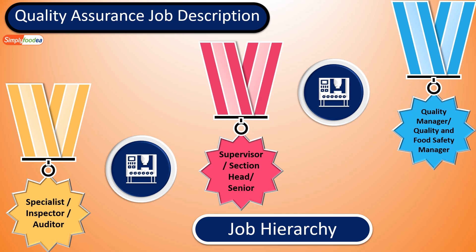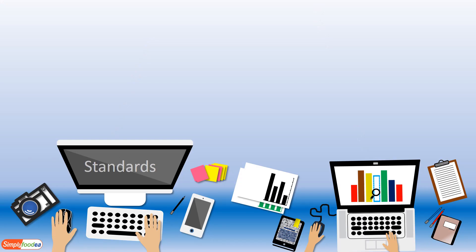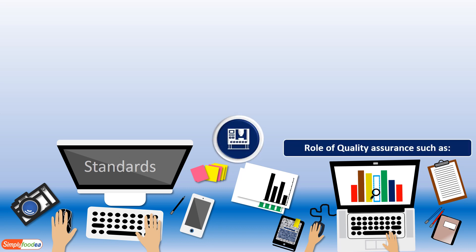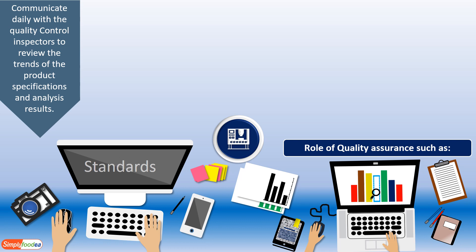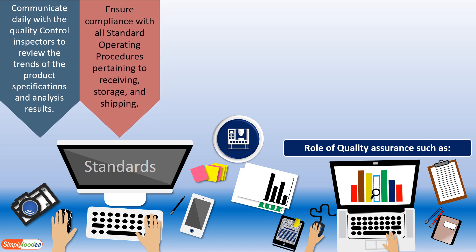Now let's go to the job description and some of the roles of the quality assurance. The QA is responsible for communicating daily with the quality inspectors — mainly quality control inspectors — to review the trends of product specification and analysis results, and to ensure compliance with all standard operating procedures (SOPs) pertaining to receiving, storage, and shipping.